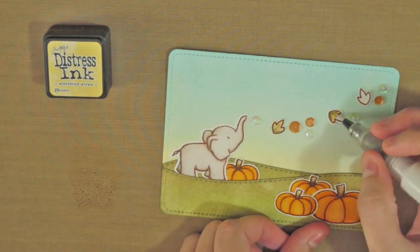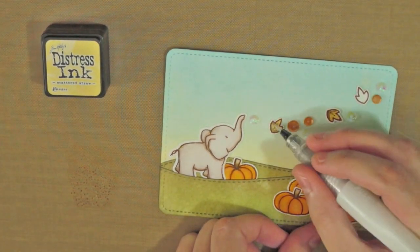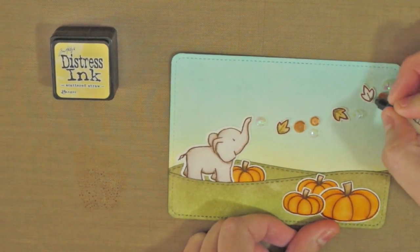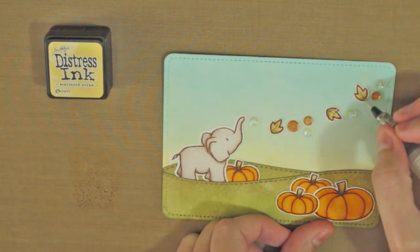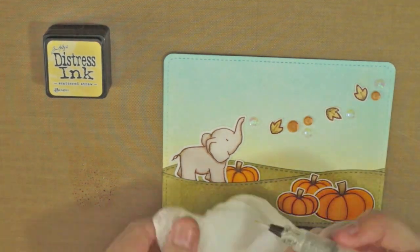As you can see, I also added some sequins in orange and iridescent clear which I glue using my multimedia mat. I rearranged them all so that it looks like if they were taken by the wind, blown by the elephant.